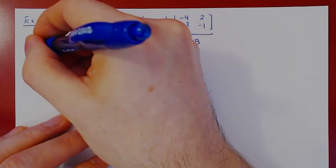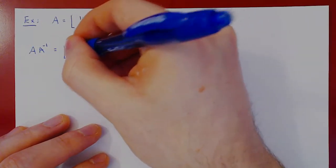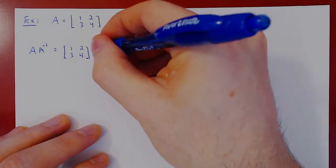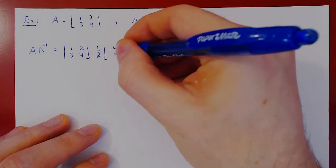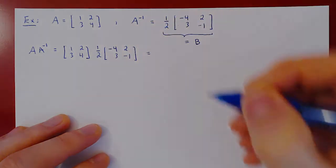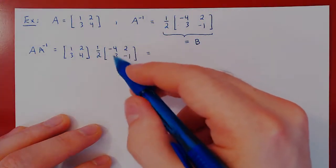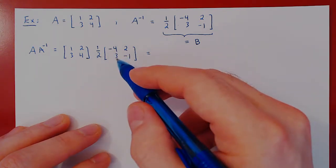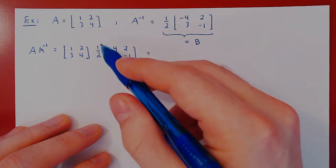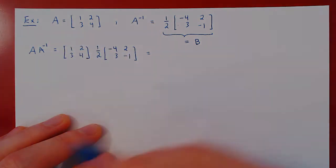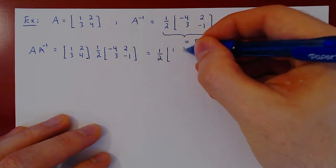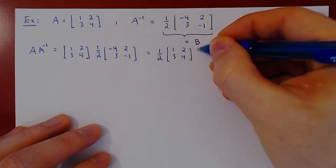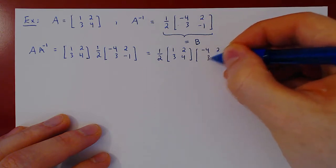Let's compute AB — A times A inverse. So 1, 2, 3, 4 times what we claim to be A inverse: negative 4, 2, 3, negative 1. Now you have two options. You could multiply this matrix by 1 half and then perform the matrix multiplication, but you can do better. As 1 half is a scalar multiple, it can be moved up front of the multiplication, and this will simplify your calculations. So we'll be left with 1 half times the matrix 1, 2, 3, 4 times the matrix negative 4, 2, 3, negative 1.